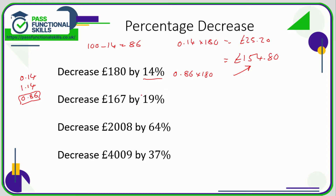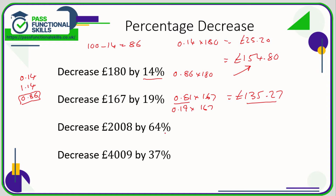In this next one, if we're decreasing by 19%, the new value is 81% of what it was originally. So we need to work out 81% of 167. The multiplier for 81% is 0.81, so 0.81 times 167 comes to 135 pounds 27. Alternatively, work out 19% of 167: 0.19 times 167 is 31 pounds 73, take that from 167 and you get exactly the same answer. If you're not comfortable using these multipliers for percentage decreases, just keep it simple — work out the percentage and subtract it.